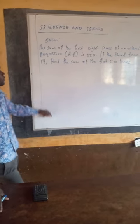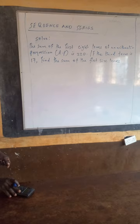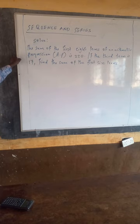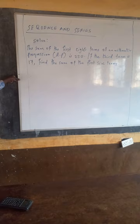In our class today, we shall be learning on sequences and series, and we shall look at this example. The first one is: the sum of the first eight terms of an arithmetic progression (AP) is 220. If the third term is 17, find the sum of the first six terms.